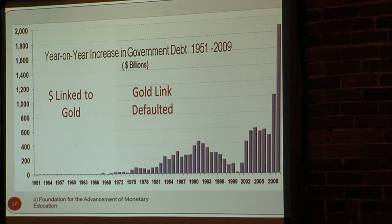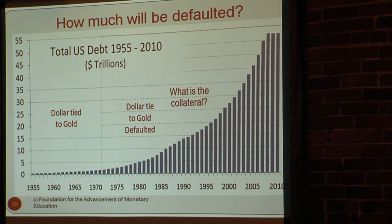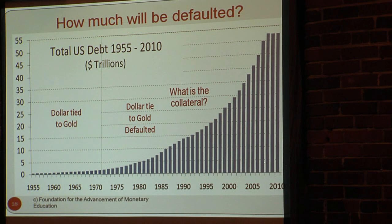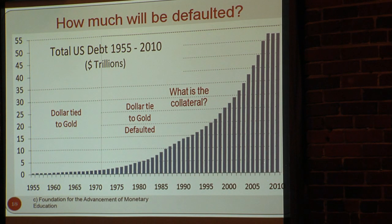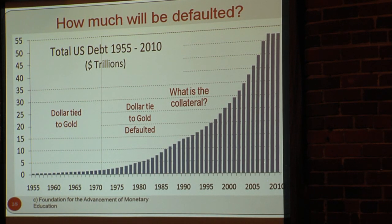The same thing applies on the private side. After the link to gold was broken — and this is not contingent debt, nothing to do with promises — it went from a fairly low level in the 1970s to today something like 52 to 53 trillion dollars. This data comes from the Federal Reserve's flow-of-funds report. How much will be defaulted? The answer is all of it. The collateral is mostly real estate — residential and commercial — but as the dollar depreciates, this debt will be satisfied with worthless money.